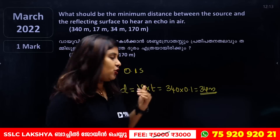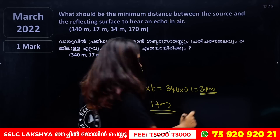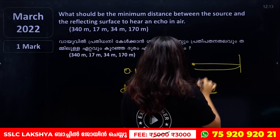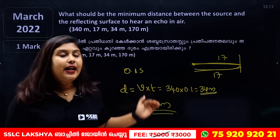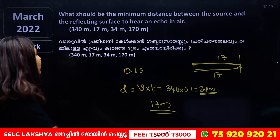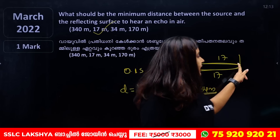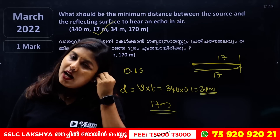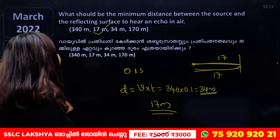So velocity into time: 360 times 0.1 equals 34 meters total distance. Since sound travels to the wall and back, the minimum distance is 34 divided by 2, which is 17 meters to get an echo.